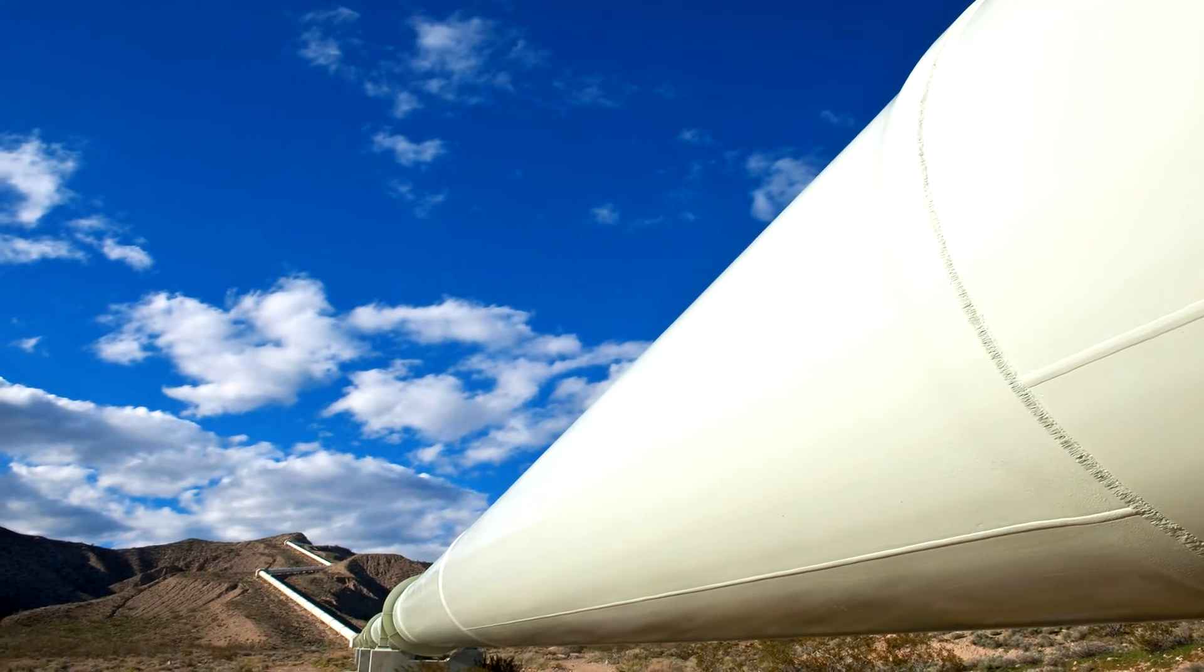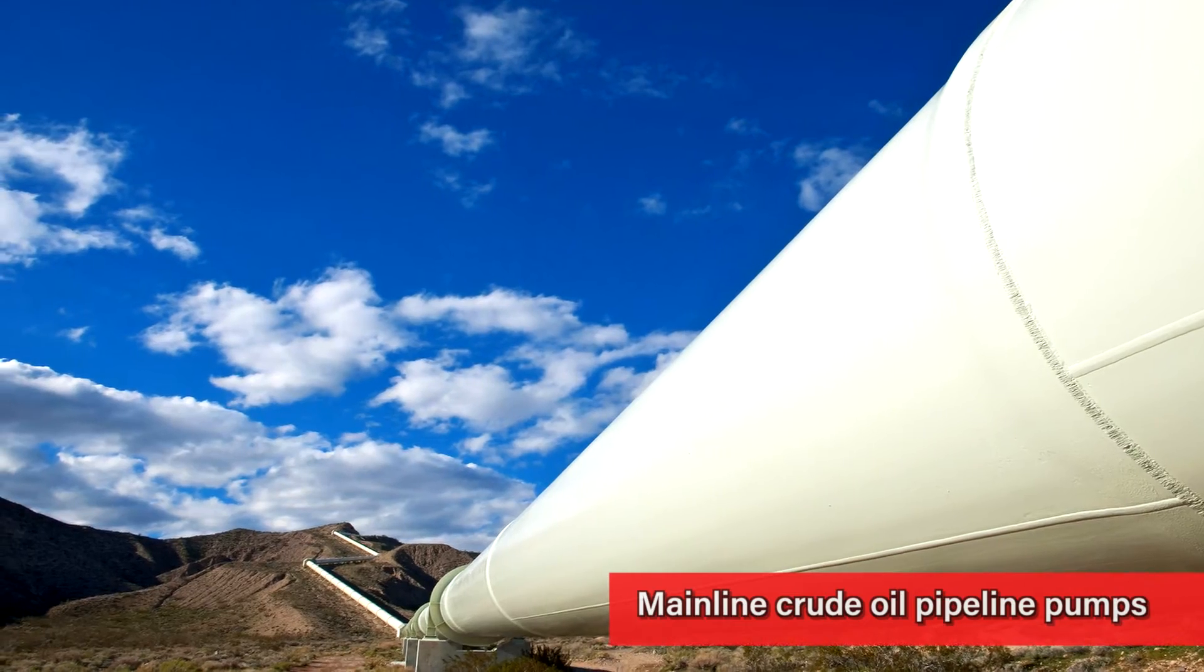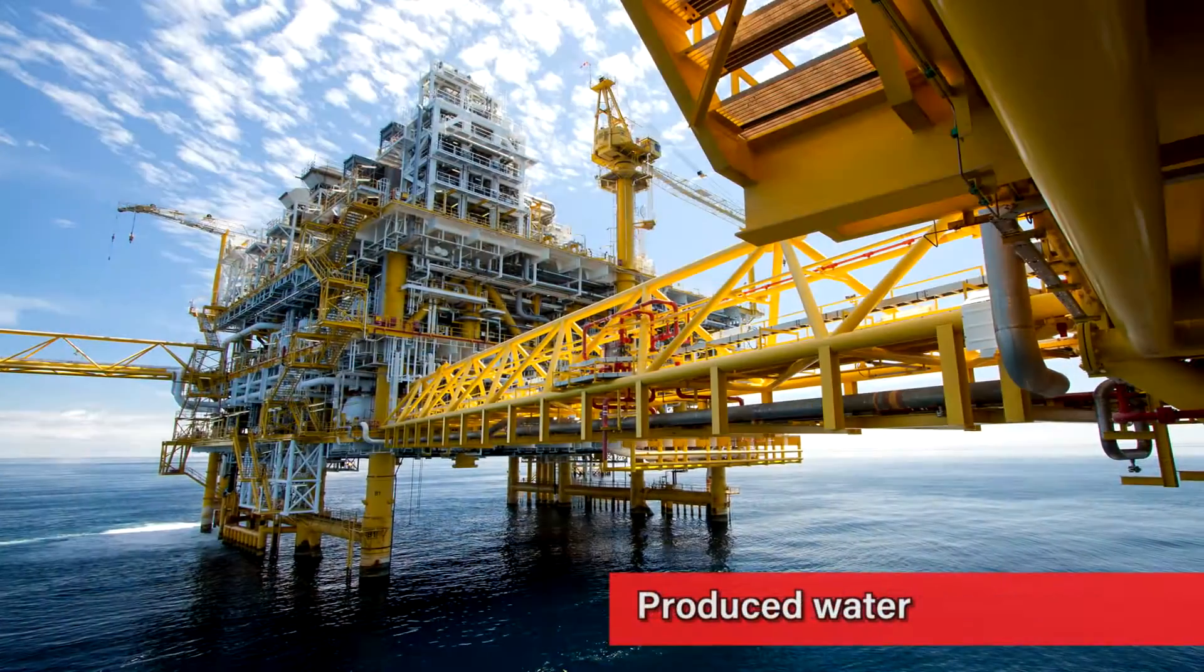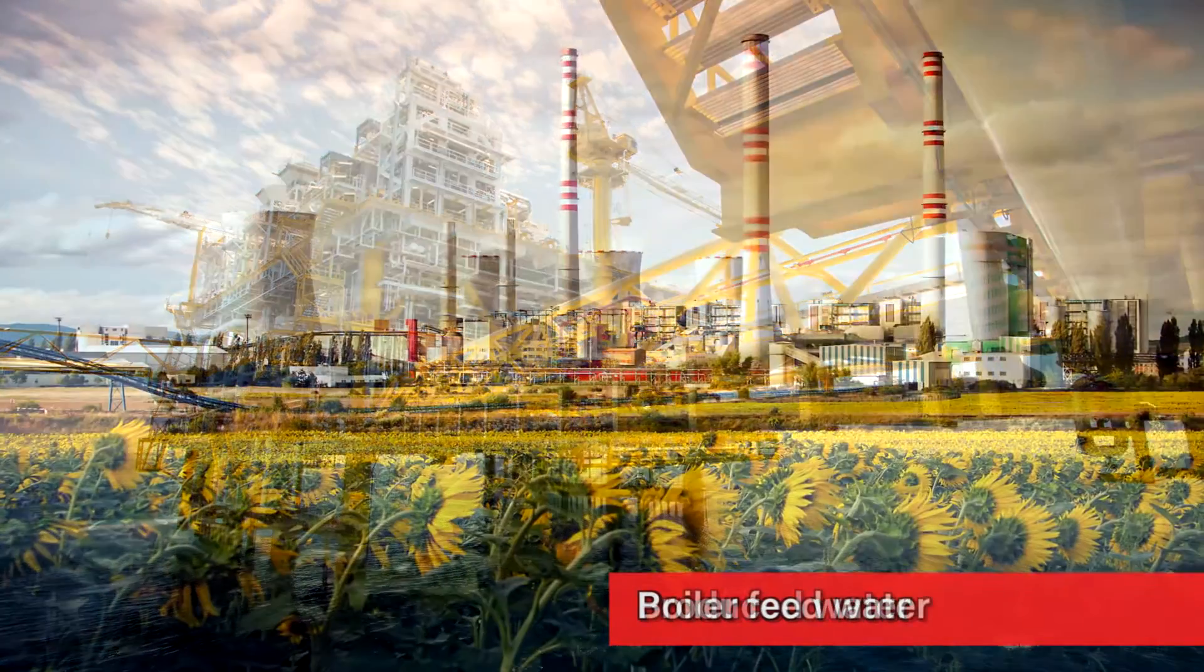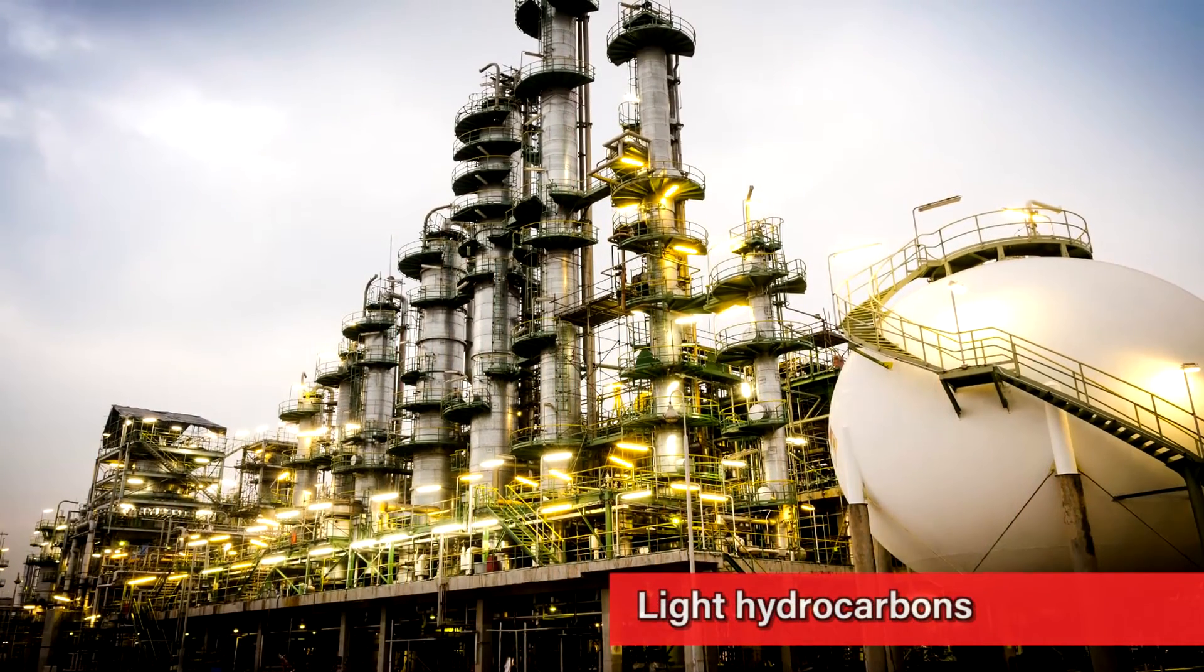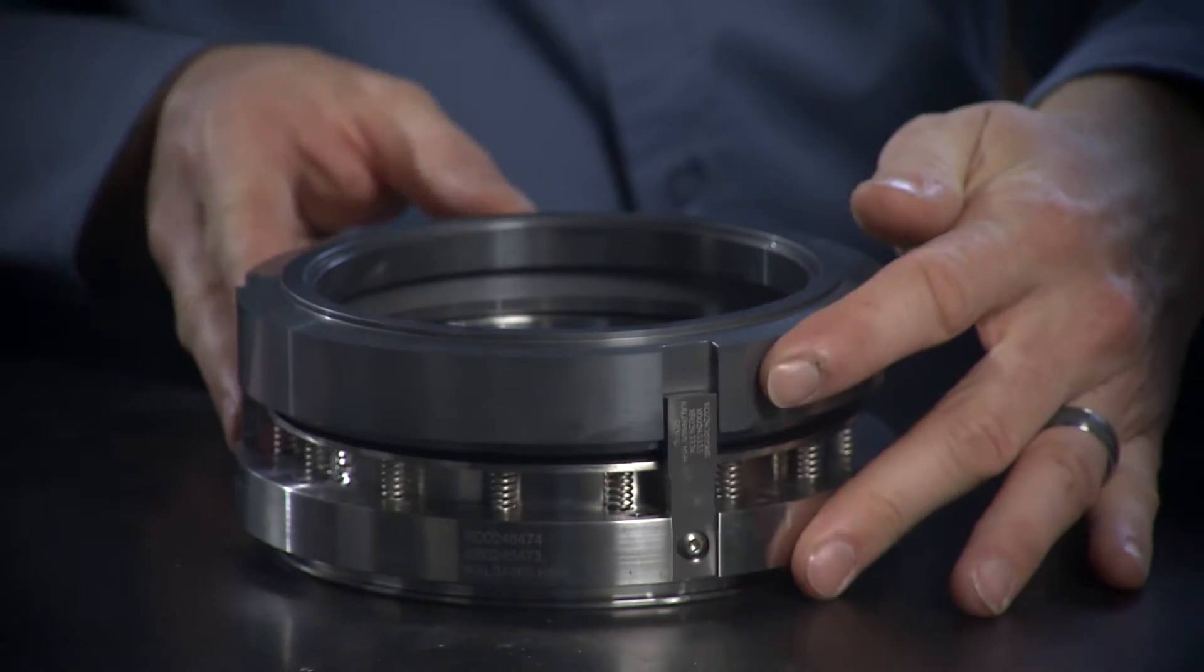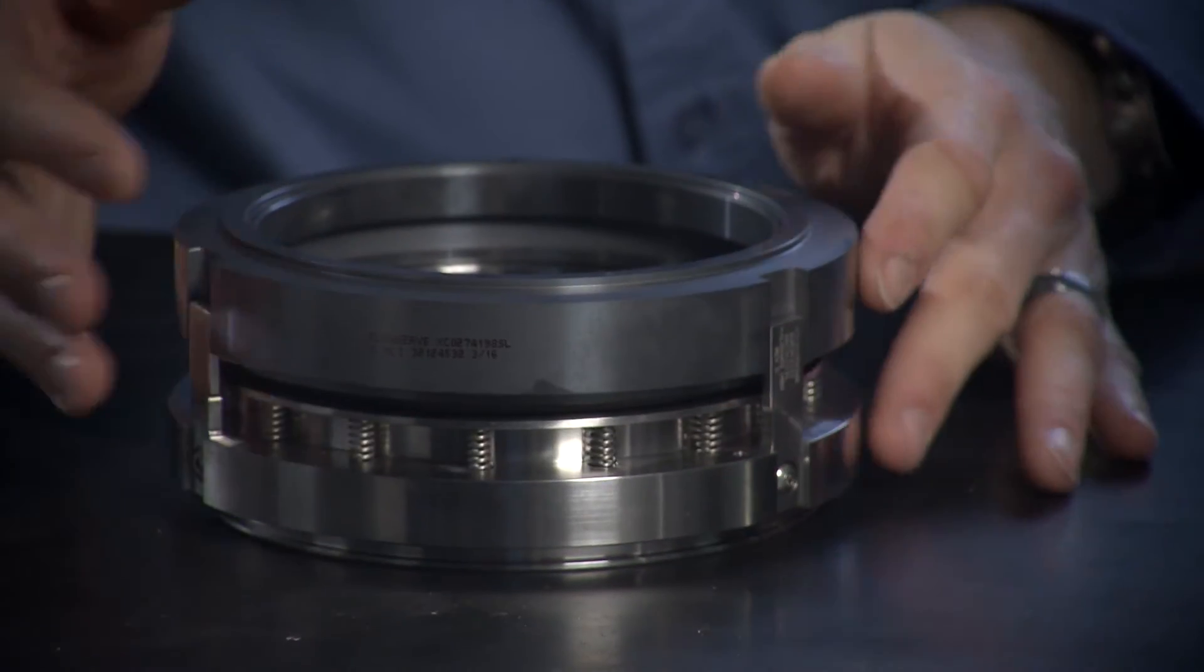The typical applications for the HSH seal include mainline crude oil pipeline pumps, produced water, boiler feed water, and light hydrocarbons. But there are numerous other applications which benefit from the speed and pressure capability the HSH seal offers.